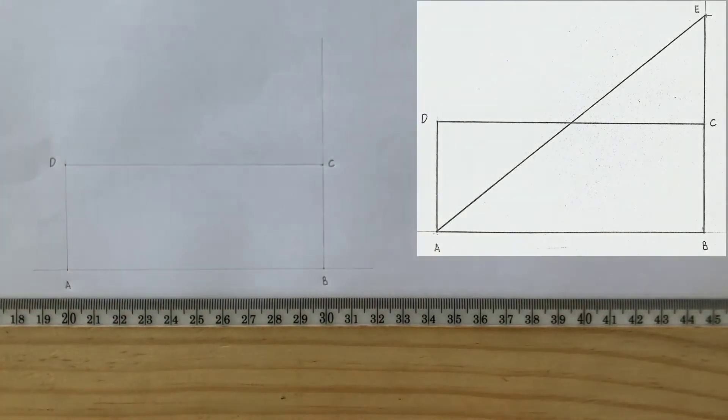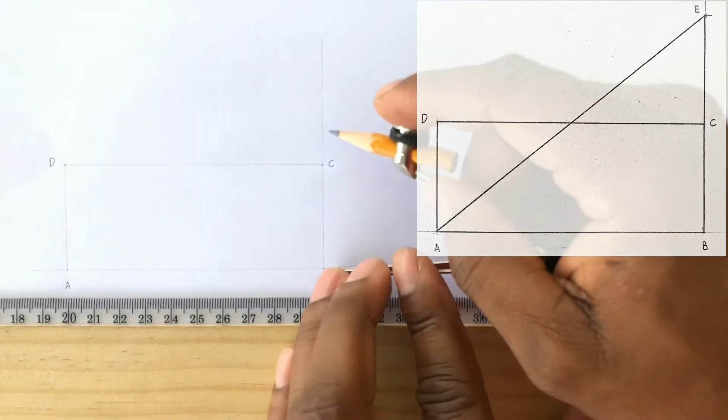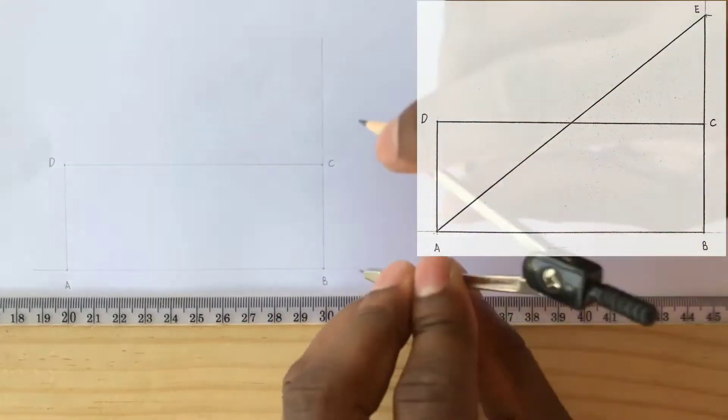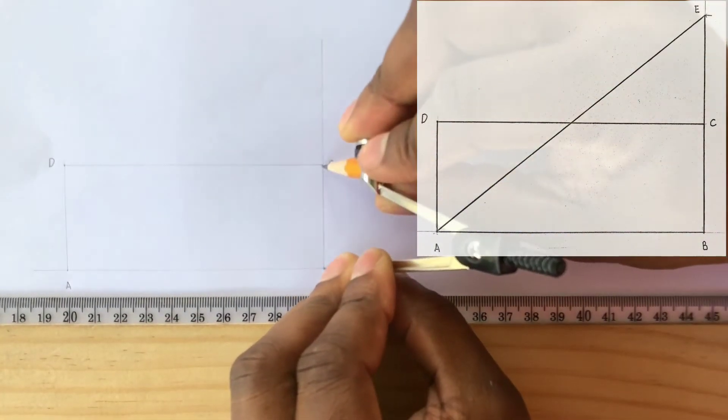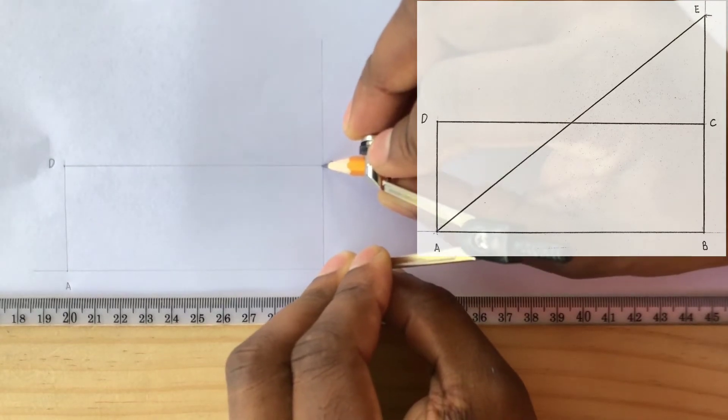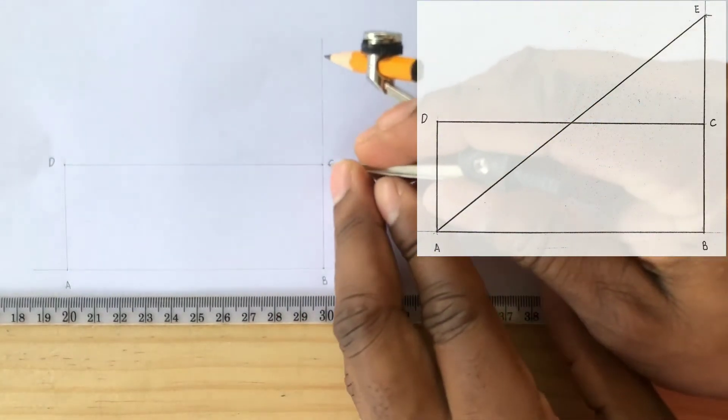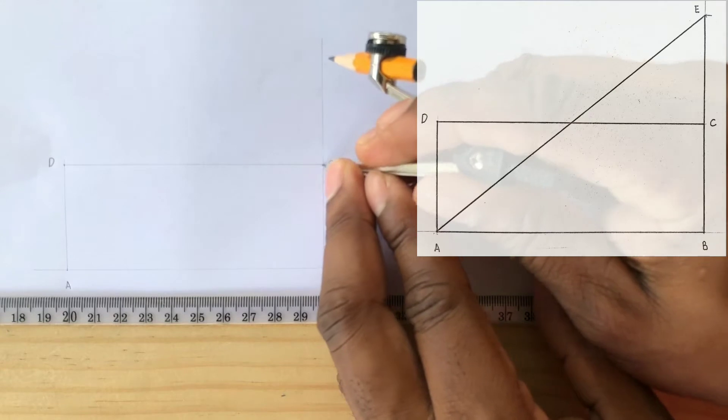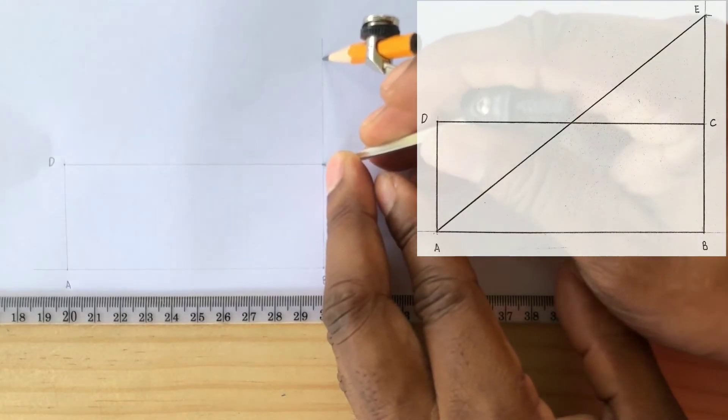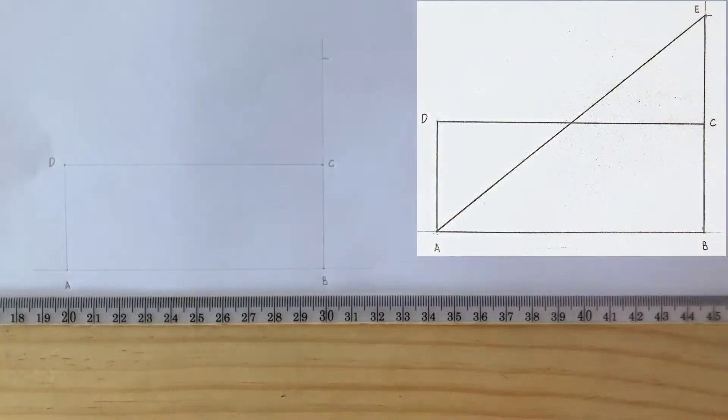Now open your compass to the width of this rectangle BC. With the compass center at point C, draw an arc to touch the perpendicular line. Now label this point E.